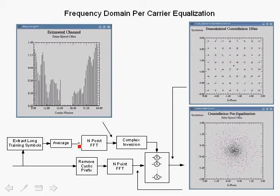Since we have two long symbols, we can actually average them in the time domain in order to reduce the effects of noise. Then we perform an N-point 64-point FFT in our case, and we obtain the carriers.